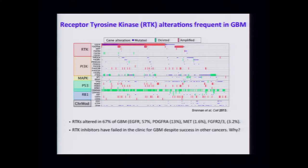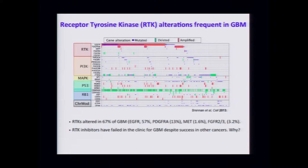GBMs seem like a perfect setting to use RTK inhibitors. Look at the genetics: you've got EGFR amplification in a huge proportion, PDGFR amplification in others — altogether about 67% of glioblastoma brain tumors harbor an RTK amplification. This led great excitement to try RTK inhibitors in the clinic to target these genetic lesions. They haven't done anything in the clinic, though — they haven't changed the course of this disease whatsoever.